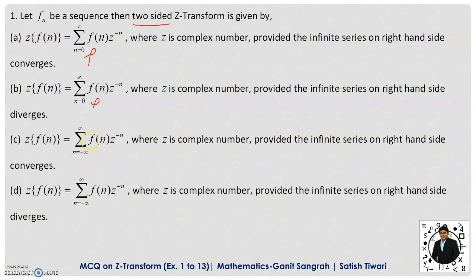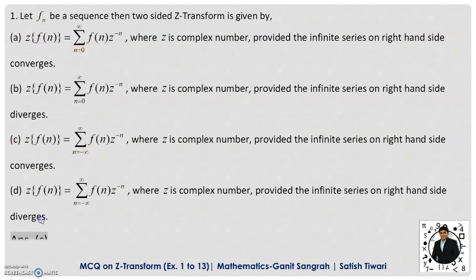In option C, the summation starts from minus infinity to plus infinity, so this can be right. In option D also, it is starting from minus infinity to plus infinity. Out of C and D, one will be correct. Option C states the series converges, whereas option D states the series diverges — but Z-transformation exists when the summation converges. Therefore, option C is the correct answer, which is the formula for the two-sided Z-transform. For the one-sided Z-transform, option A is correct, where N ranges from 0 to infinity with F(N)·Z^(−N).